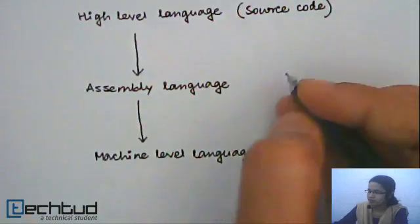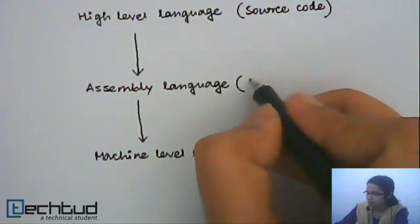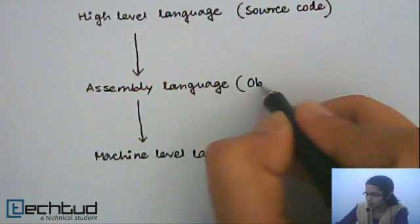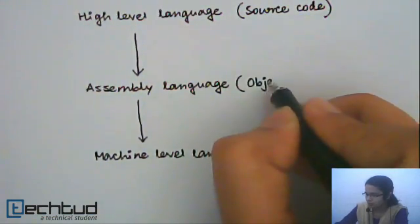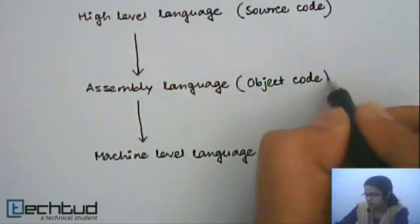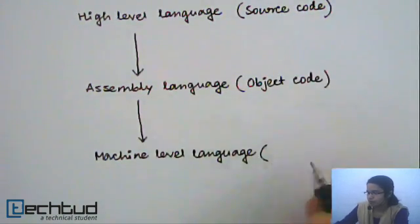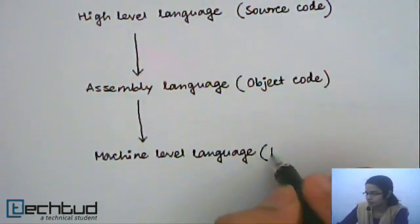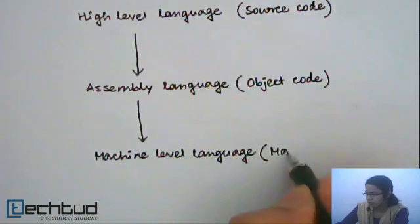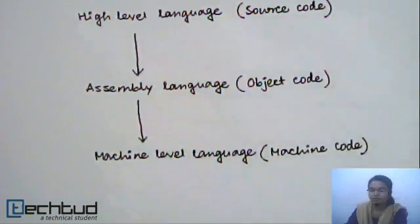The assembly language program is usually called the object code, and the machine-level language program is usually called the machine code.